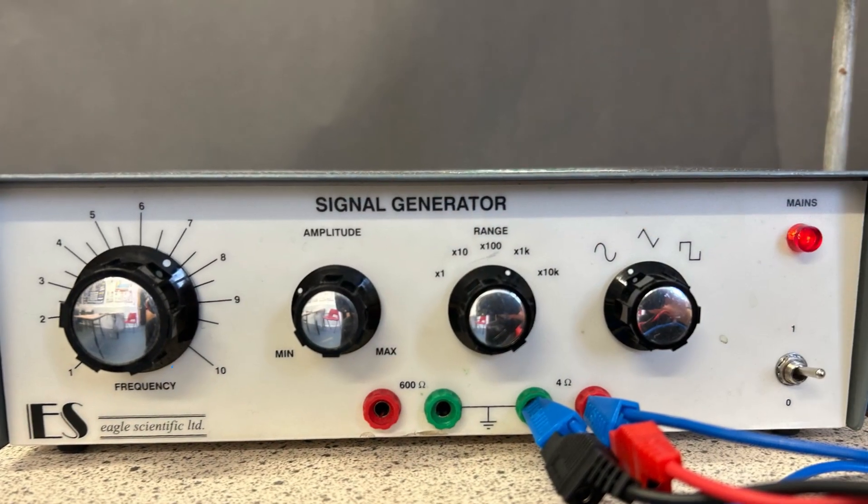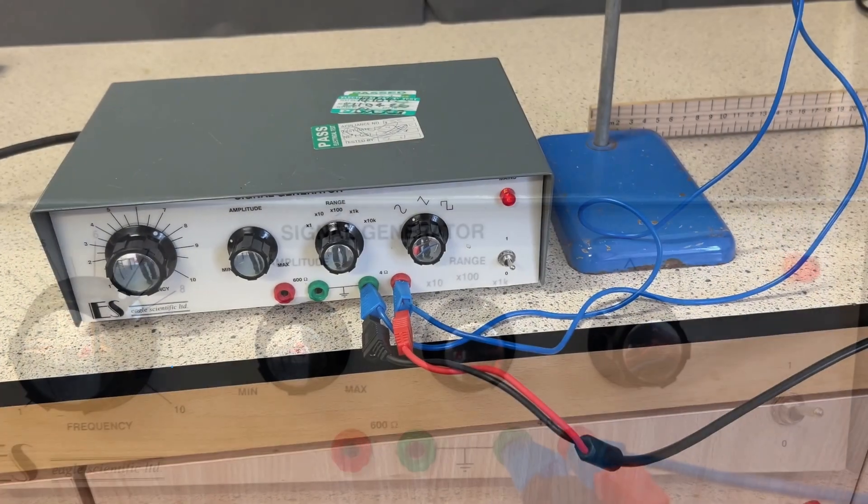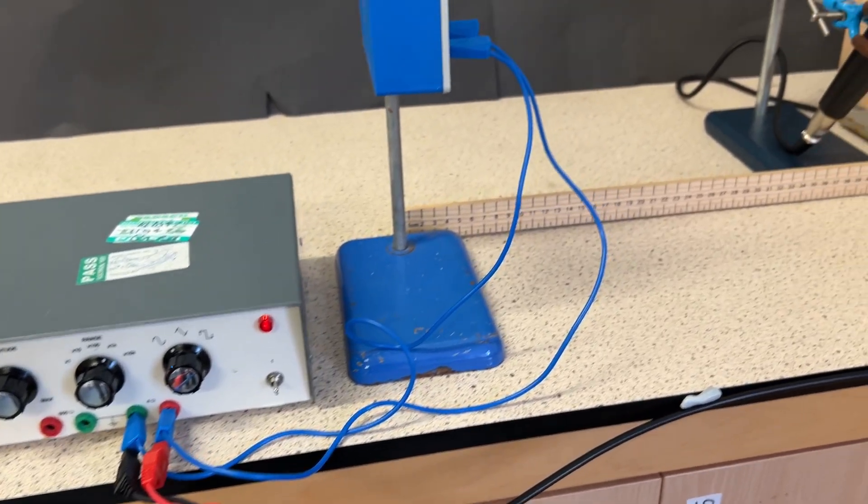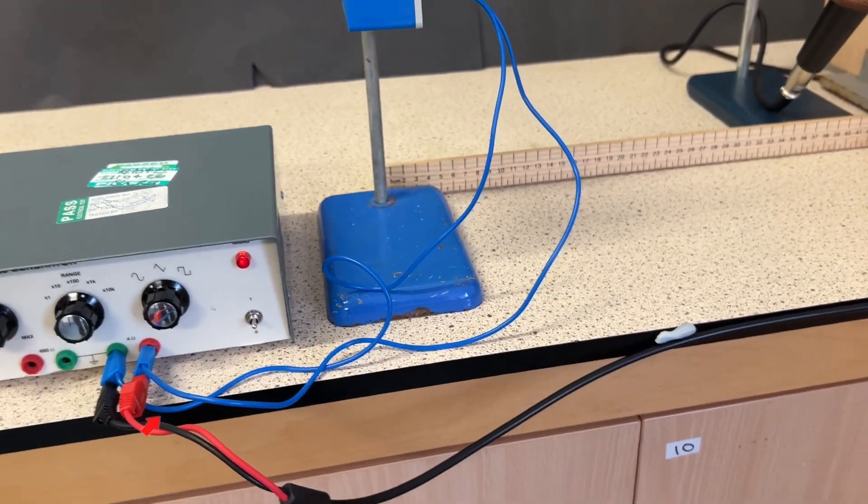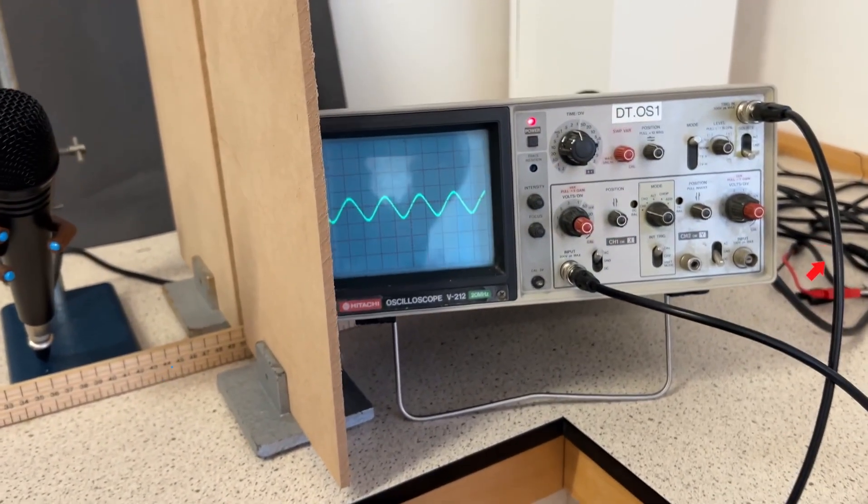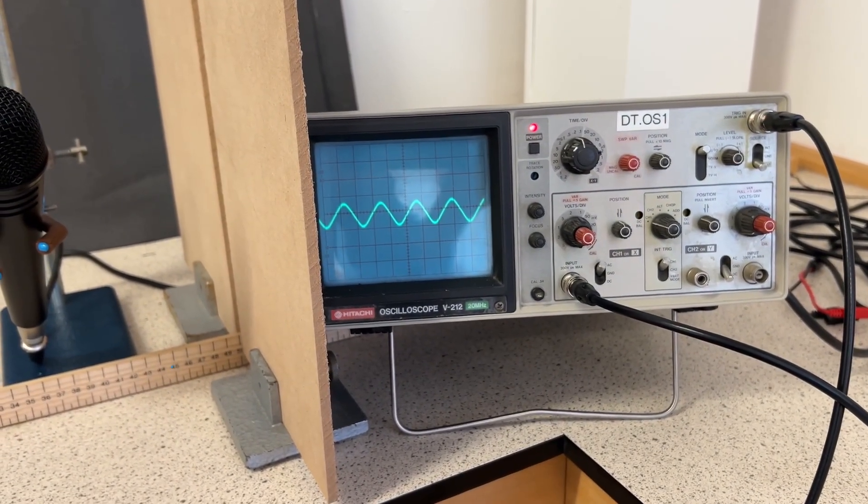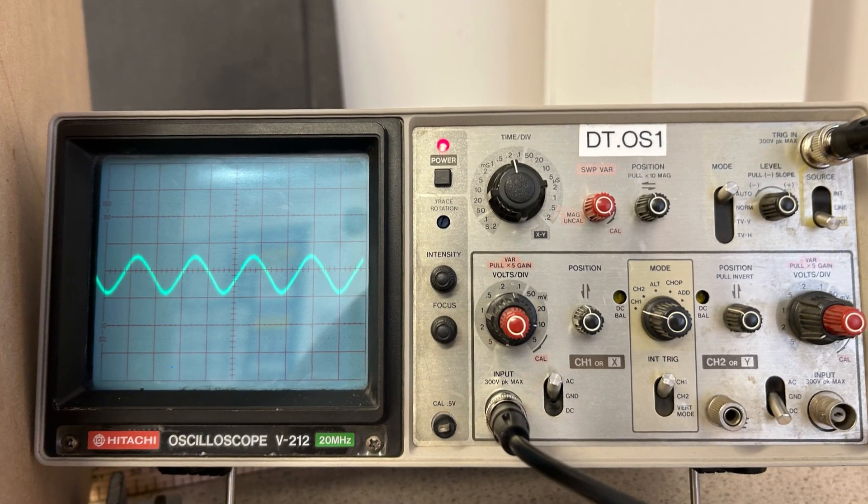If you want to set this up as a demonstration, you'll need to connect the output of your signal generator to the loudspeaker. You should also run a connection directly from the signal generator to the external trigger on the oscilloscope, and then the input for the oscilloscope is connected to the microphone.